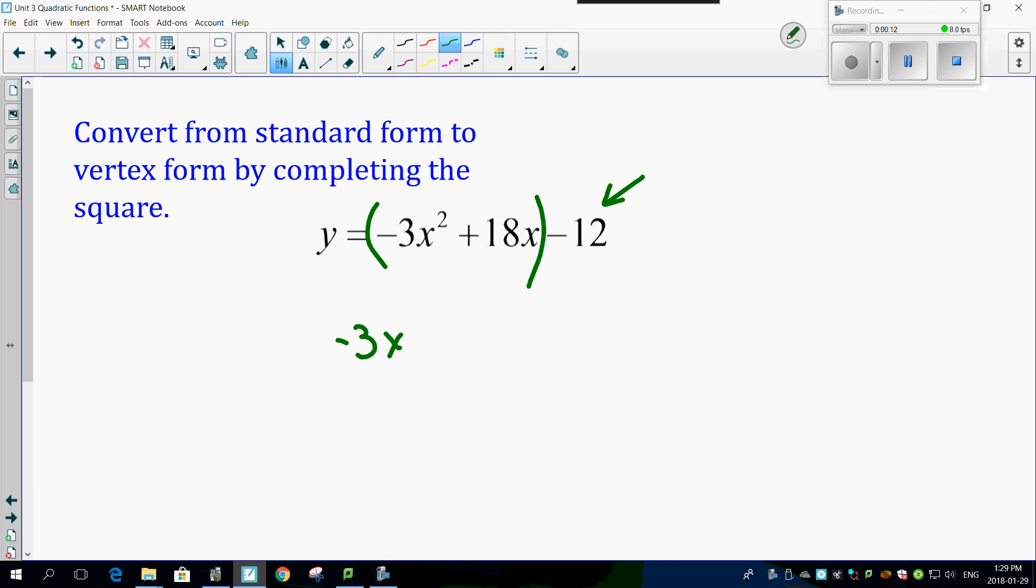So minus 3x squared plus 18x, that's what stays, minus 12 goes outside. Remember, you've got a GCF here. Your GCF has got to be negative 3. So we're going to factor that out first...